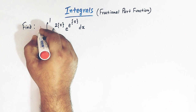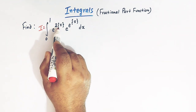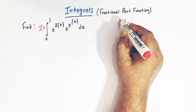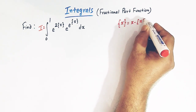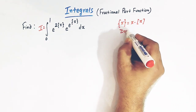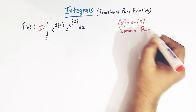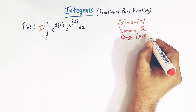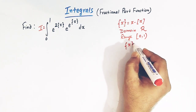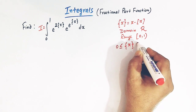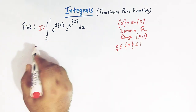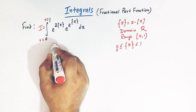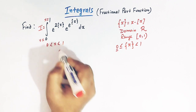So let us call this integral as I. Now we have the fractional part of x. The definition of fractional part of x goes like this: fractional part of x is x minus greatest integer of x. The domain of fractional part function is all real numbers and the range is the interval 0 to 1. So fractional part of x lies between 0 and 1 including 0. And here we have the limits from 0 to 1, so x lies between 0 and 1.